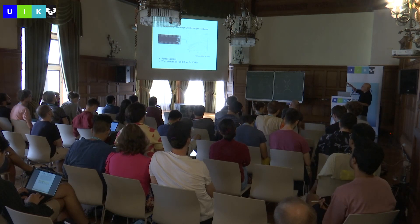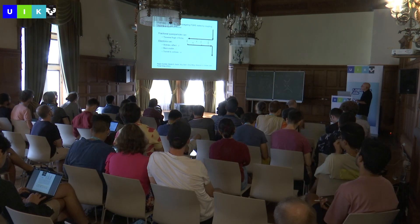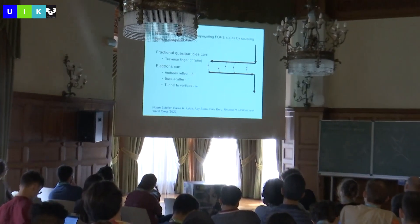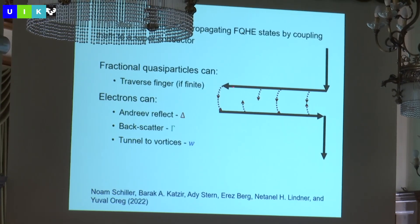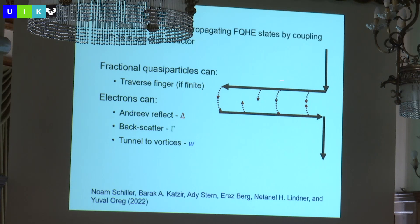Zooming in on the picture: the electron moves to the left on the upper edge and to the right on the lower edge. At the end of the finger it goes around. Several processes can happen as the electron moves along the superconducting finger: it can ignore the superconductor and tunnel through the graphene as an electron — defecting from the left movers to the right movers — or one electron from the left movers and one from the right movers can combine and go into the superconductor as a Cooper pair.